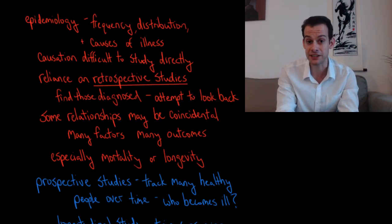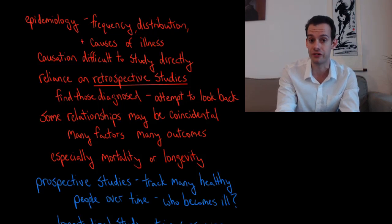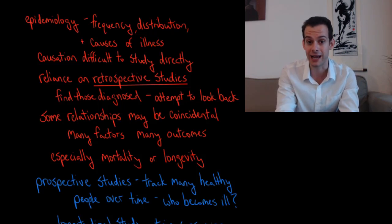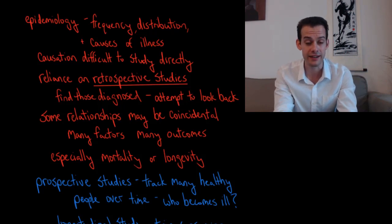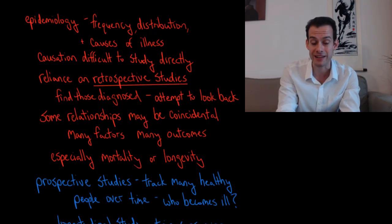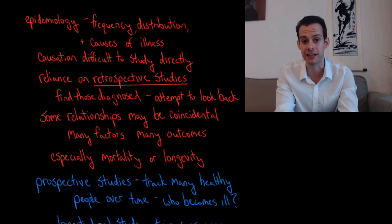This is especially true when we look at studies involving assessments of mortality or longevity. People die for many reasons and the exact causes of their death could be very complicated, involving multiple factors. So if a small number of people in our study die, this might change the overall mortality or longevity of the group even though it might not actually be directly related to the variables we're investigating.